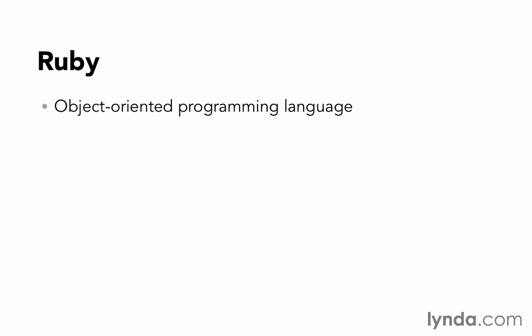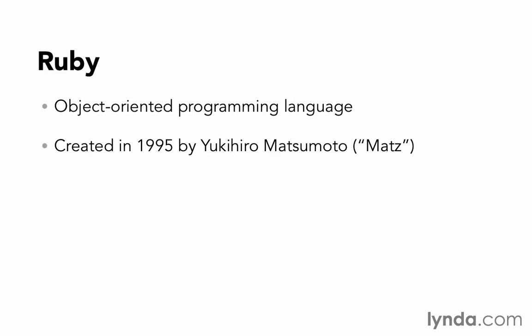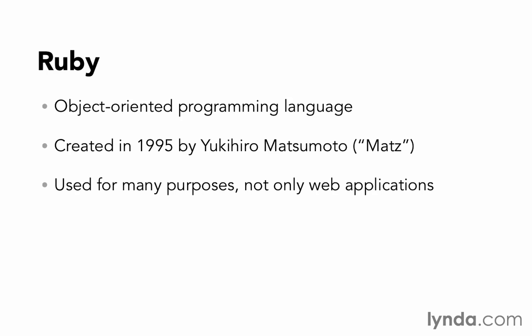So what is Ruby? Ruby is an object-oriented programming language. It was created in 1995 by Yukihiro Matsumoto, who often goes by the nickname Mats. Ruby can be used for many purposes, not just for web applications — it's just a general programming language. In fact, on lynda.com, we offer Ruby Essential Training, which is training for the Ruby programming language.